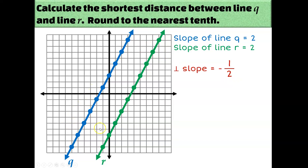So I'm just going to pick any point I want to on either of these two lines and count according to a negative one half slope until I intersect the other line. I'm going to pick the top point here on this blue line, but I could pick any point I wanted to. From this point I'll count down one and right two, down one and right two, until I intersect the green line. You could have picked any point — this line, or this line, or even this line.